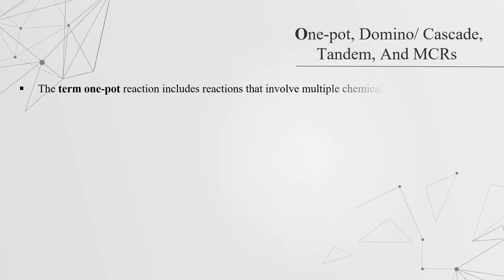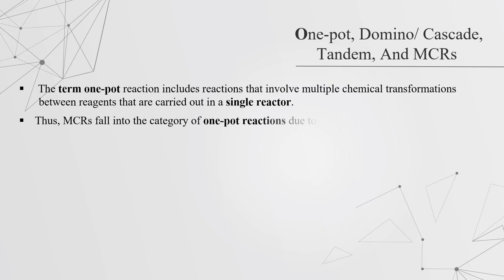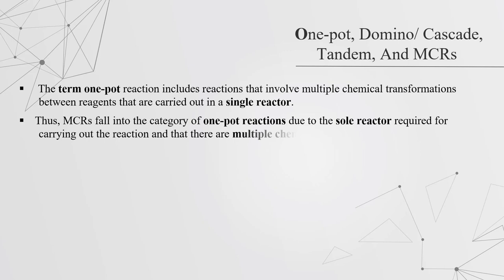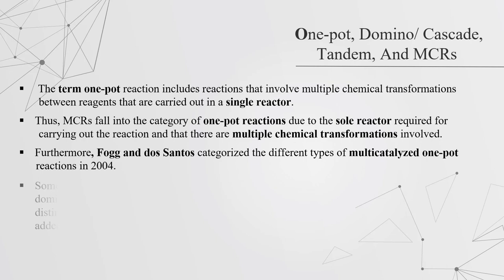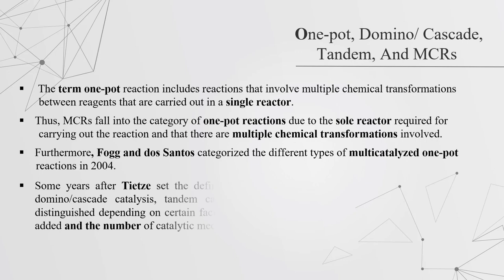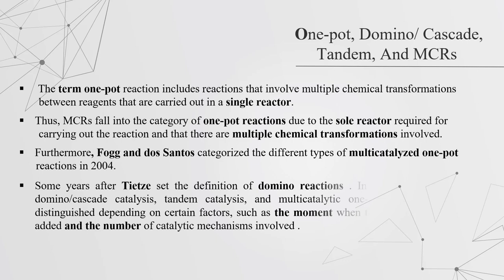The term one-pot reactions includes reactions involving multiple chemical transformations between reagents carried out in a single reactor. Multi-component reactions fall into this category due to the single reactor required and the multiple chemical transformations involved. Fogg and Dos Santos categorized different types of multi-catalyzed one-pot reactions in 2004. Some years after, Trost set a definition of domino reactions. In this categorization, domino, cascade, tandem catalysts, and multi-catalyzed one-pot reactions were distinguished depending on certain factors such as when the pre-catalysts are added and the number of catalytic mechanisms involved.